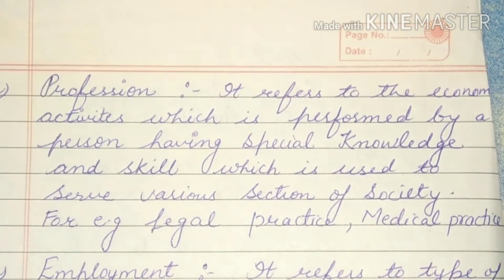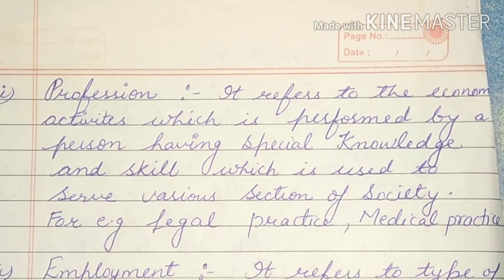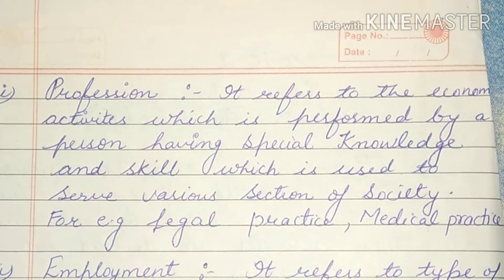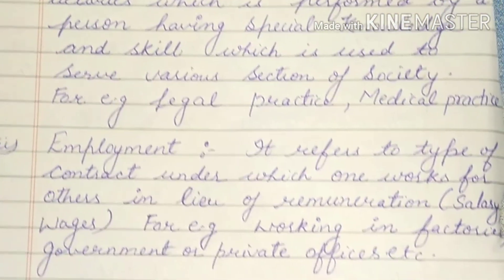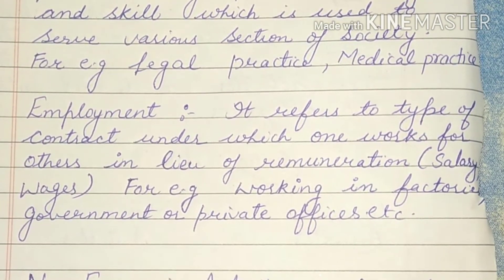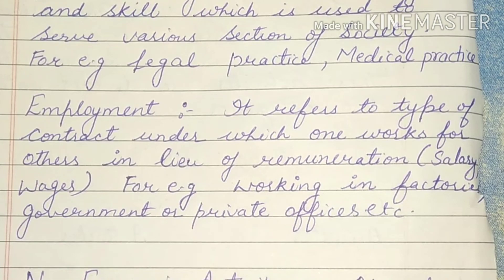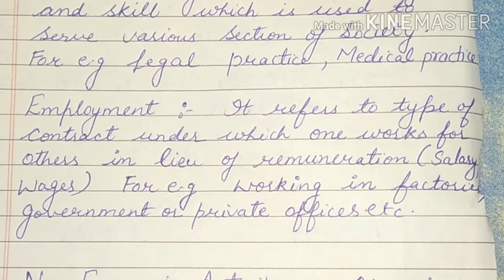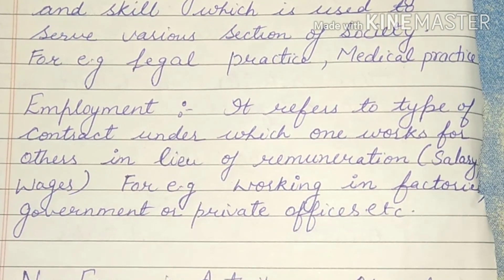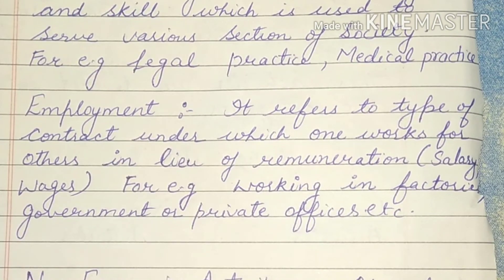These are the three economic activities, all with the purpose of earning money. Now we will study non-economic activities. Non-economic activities refer to those activities which are performed to get internal satisfaction — not to earn money. The purpose is internal satisfaction. For example, your mother cooks food for you — her purpose is not to earn money.